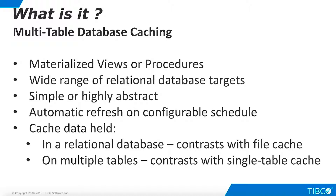TDV offers three mechanisms for caching: file-based, single-table, and multi-table. In general, single-table caching is the go-to choice for most needs. With single-table caching, cached data is stored in a relational database product of the customer's choice. This contrasts with file-based caching, where cached data is stored in a delimited flat file. File-based caching is generally appropriate for development, but is seldom used in production because it cannot leverage important features provided by relational databases, such as indexing.